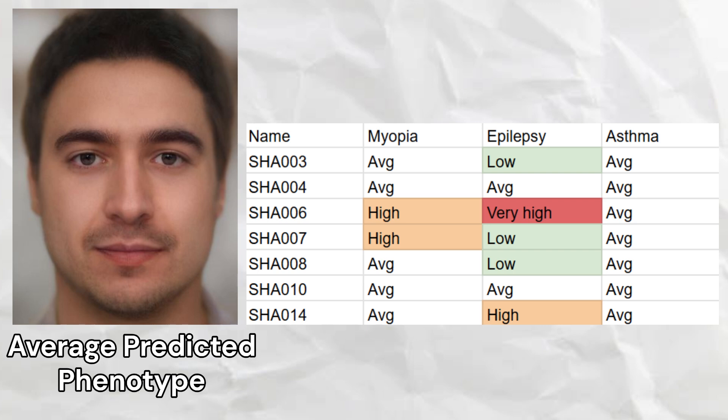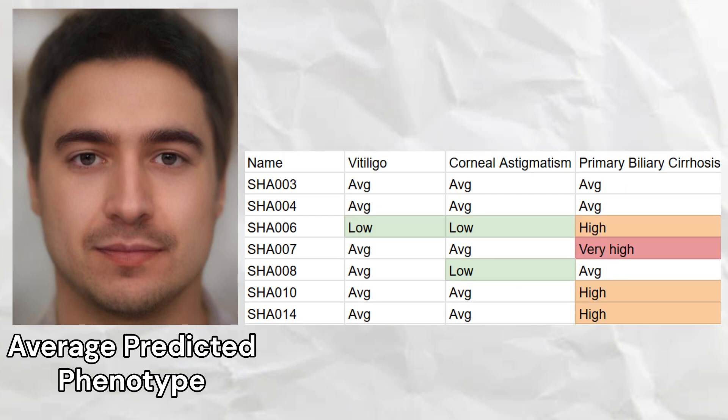Every sample had an average predisposition to asthma. One sample had low odds of vitiligo, two samples had low odds of corneal astigmatism, and four samples had high or very high odds of primary biliary cirrhosis.